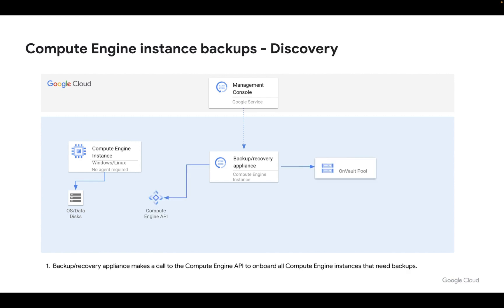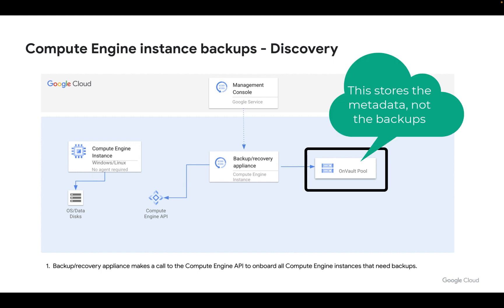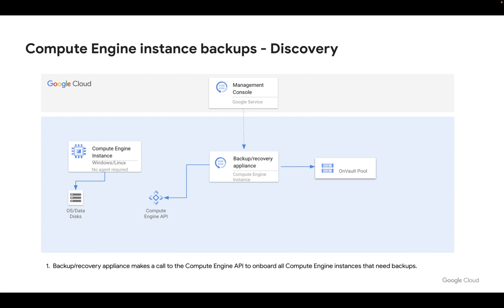The Backup and DR service uses an IAM service account attached to our backup and recovery appliance to perform backups using Compute Engine APIs. It will also auto-create any on-vault pools it needs. So all you need to do on the Compute Engine side is make sure that the auto-created service account has been added to all relevant projects with the correct IAM roles. We also need to build some backup plans, and once we've done this, we can begin the process of creating backups.